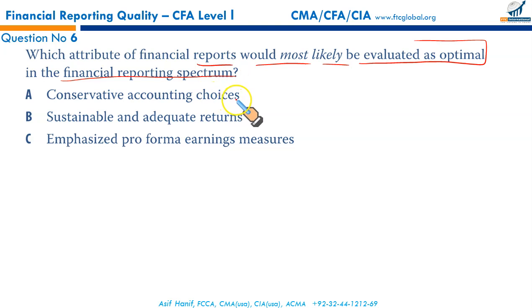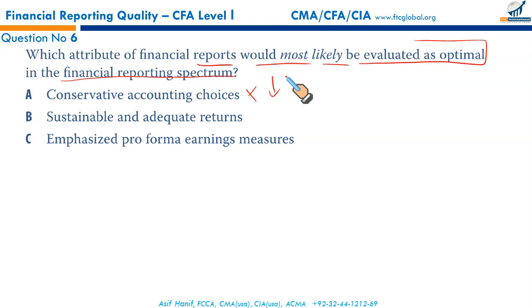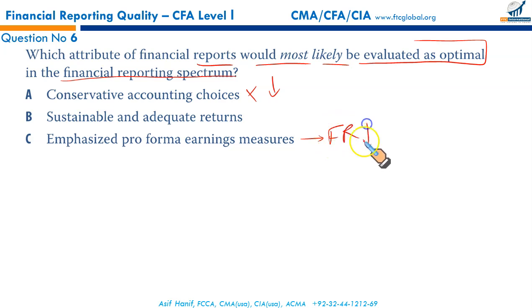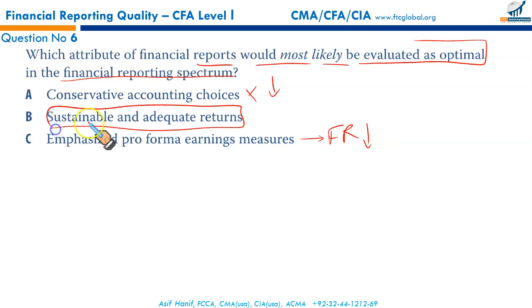Which attribute of financial reports would most likely be evaluated as optimal in the financial reporting spectrum? Conservative accounting choices would make financial reporting quality lower. Earnings management to increase performance measures results in low financial reporting quality. The optimal attribute is sustainable and adequate return — this is viewed as favorable and conducive to financial reporting quality. B is the right answer.